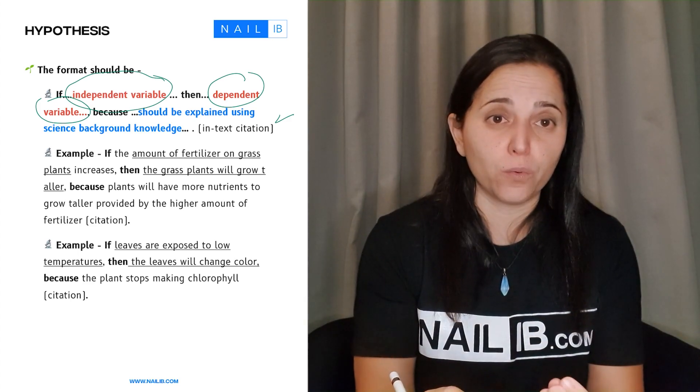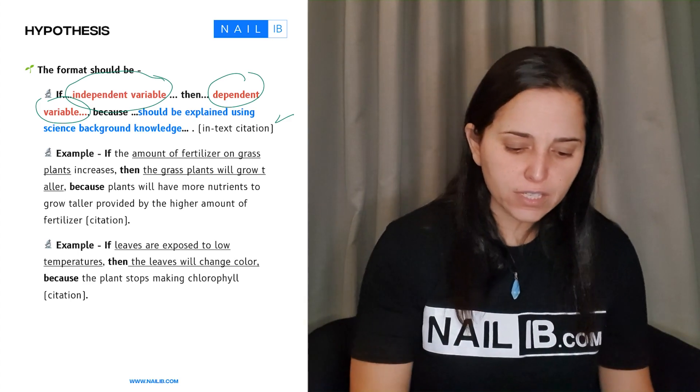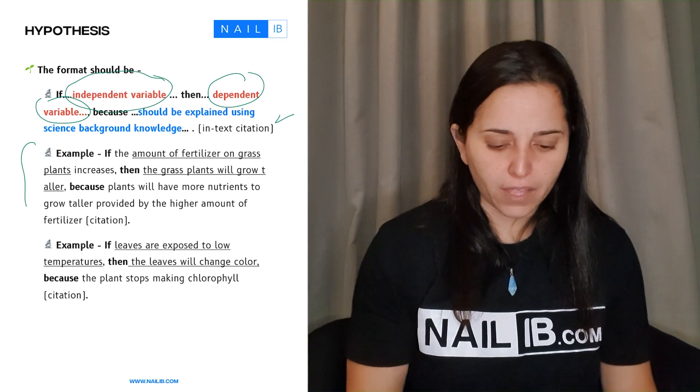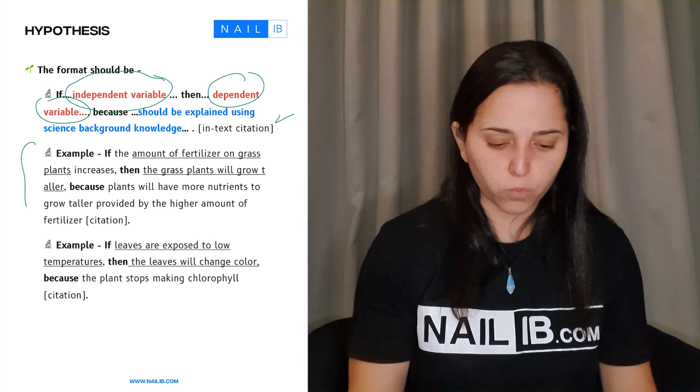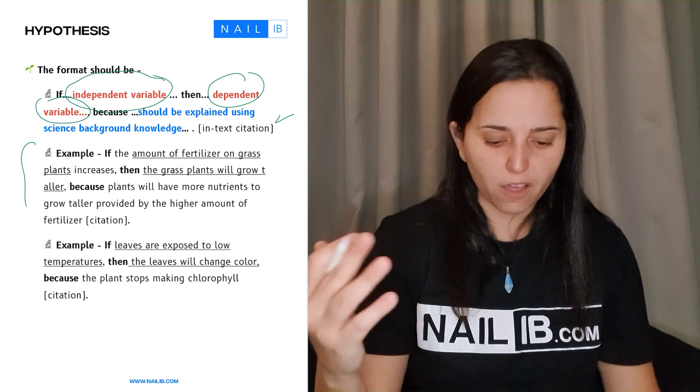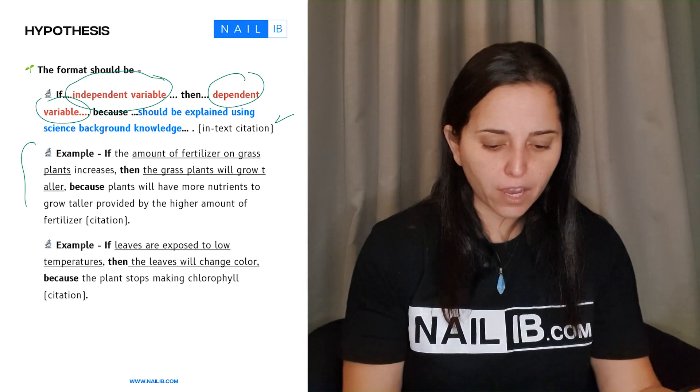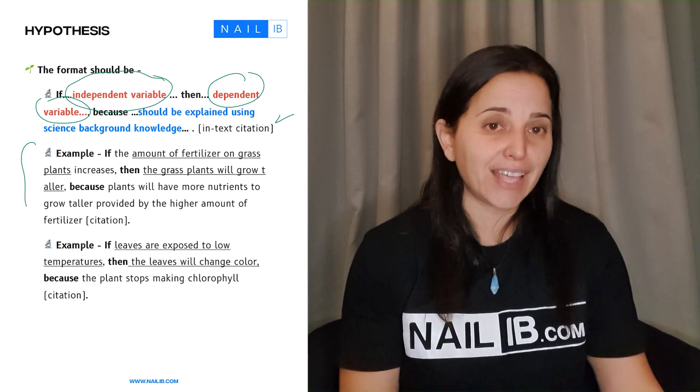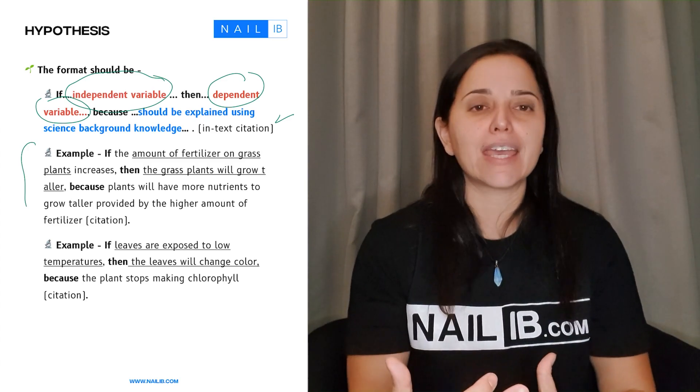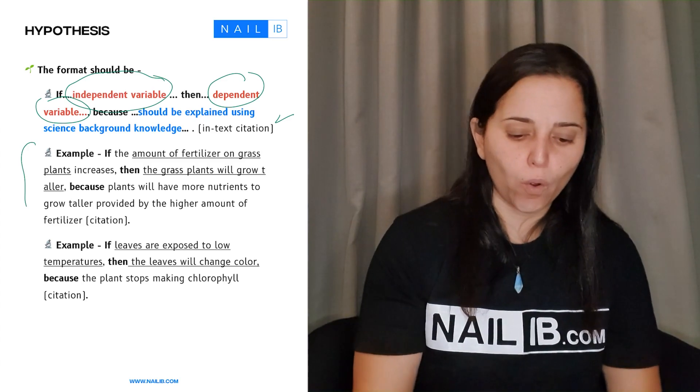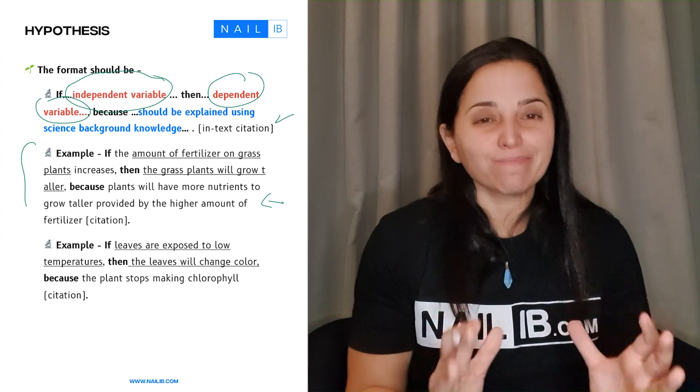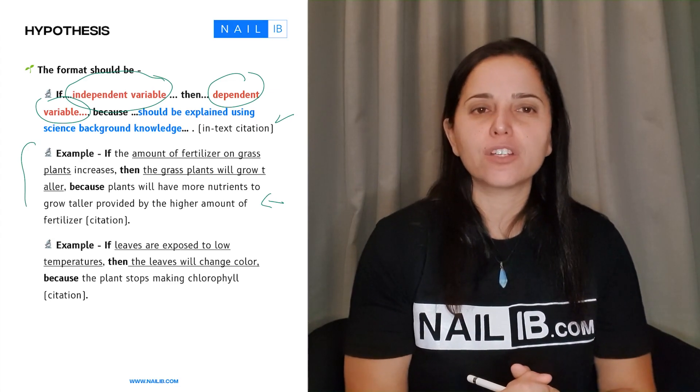Okay, so here is an example. If the amount of fertilizer on grass plants increases, then the grass plant will grow taller because plants will have more nutrients to grow taller provided by higher amount of fertilizer. That's a happier explanation to go, although this is a very generalized explanation. You can go more detail.